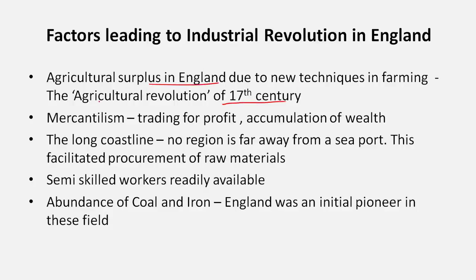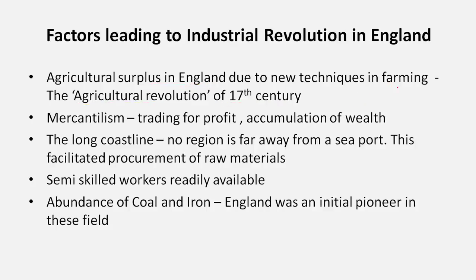The first factor is agricultural surplus in England in the 17th century — also known as the Agricultural Revolution. This preceded the Industrial Revolution. In the 16th and 17th centuries, new techniques were adopted by farmers: a new cropping pattern including rotation of crops, new types of plows, and new farming instruments. This increased farm production, and as techniques improved, fewer people were required in agriculture, creating a semi-skilled workforce available for industry.